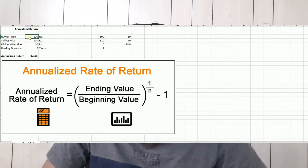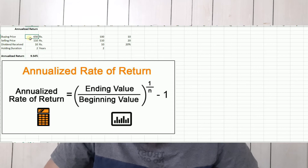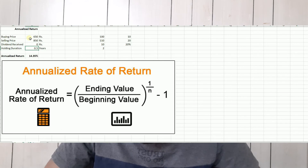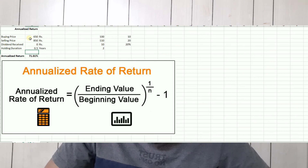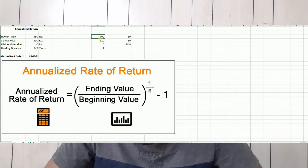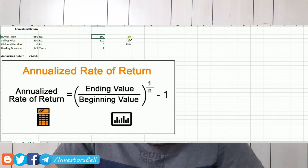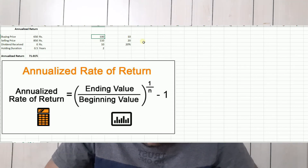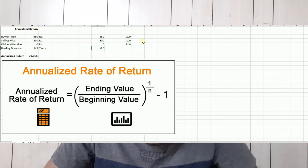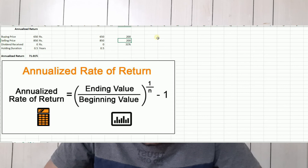Let me show you another example. We have a share bought at 650 rupees and sold at 850 rupees. I will show you the dividend and the time period. The holding period is 6 months, which is half a year. That's how we calculate the annualized return. If you know your buying price of 650 and selling price of 850, with a dividend of 0.5, the capital gain is 200.